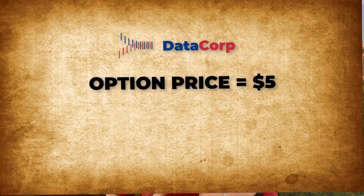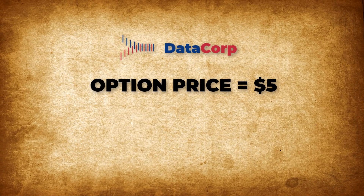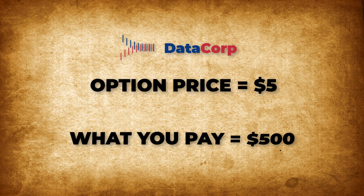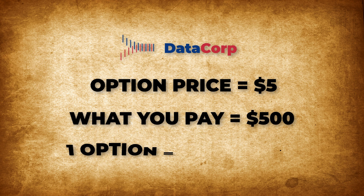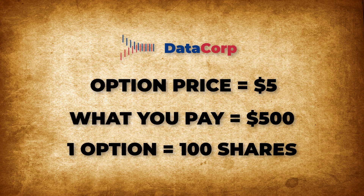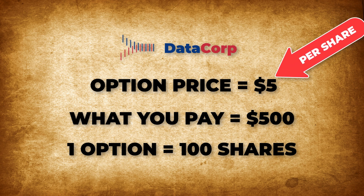Fifth and finally, when you buy an option, it has a price associated with it, but that price is misleading. If an option is said to cost $5 to buy, it actually costs $500 to buy, because options are almost always for 100 shares at a time, and the $5 only represents the price per share, not the price per 100 shares.